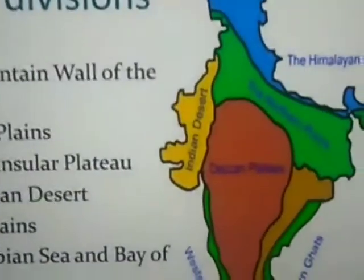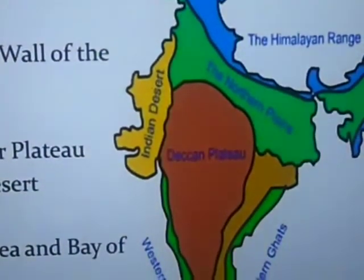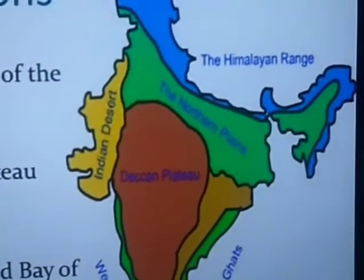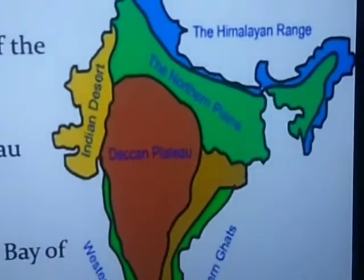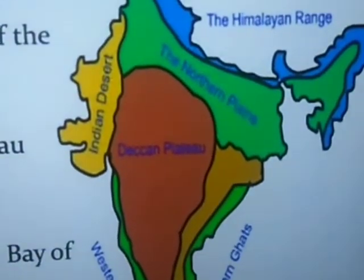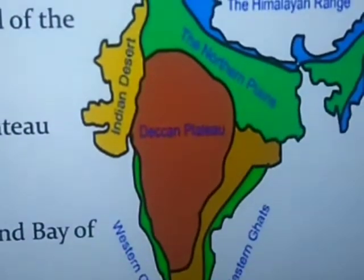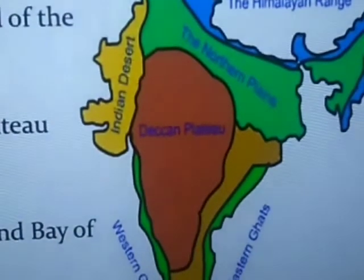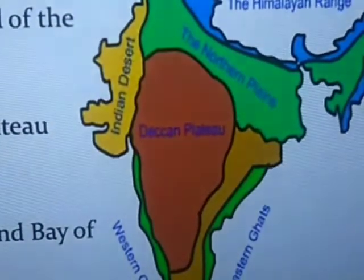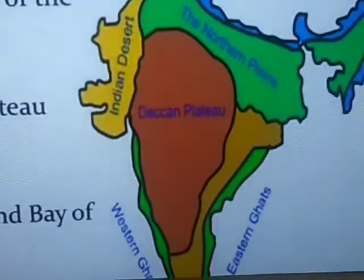Let's study what is called a Peninsular Plateau. It is also called a Deccan Plateau. This region lies to the south of the northern plain and it has an average height of 300 to 760 meters and slopes down from west to east.